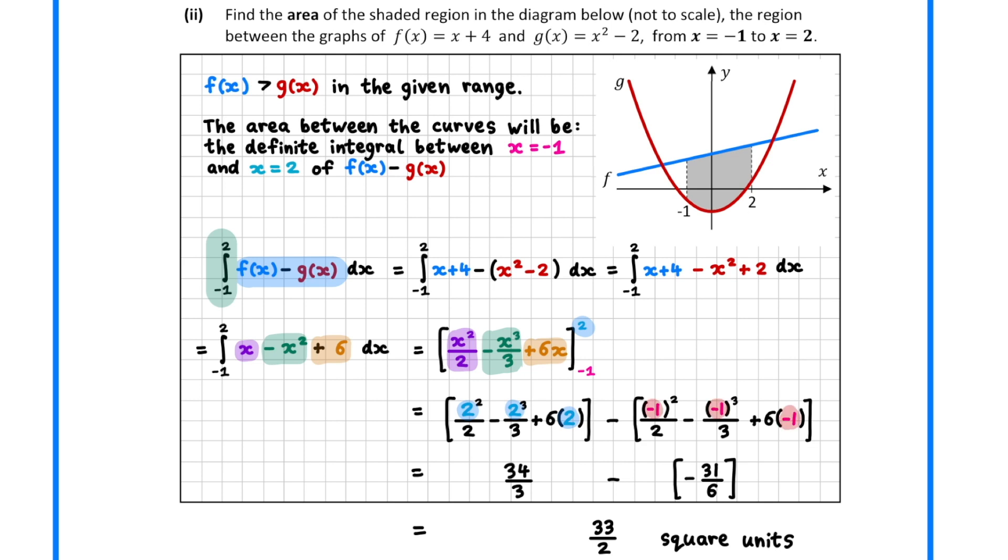Sub in the lower bound of minus 1, and then subtract the answers. This gives us a final answer of 33 over 2 square units.